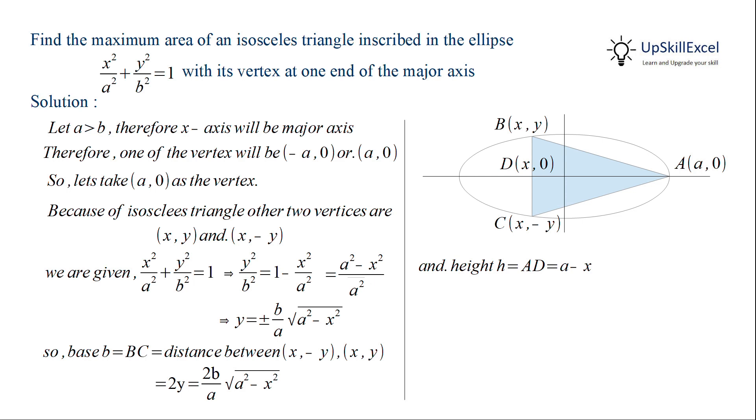Now we have got the height and base. So we can find out the area of the triangle which is equal to half of base times height. Substituting the values of base and height and then canceling out the two we get area is equal to (b/a)√(a² - x²)(a - x).